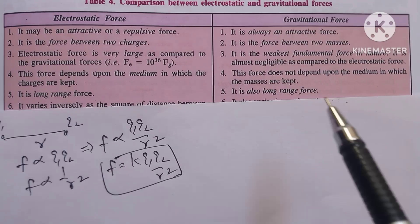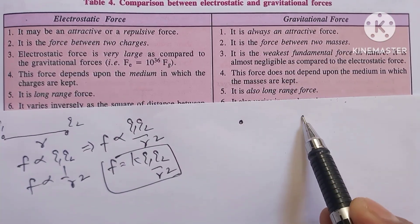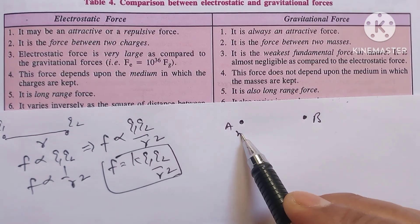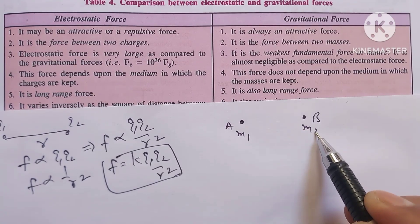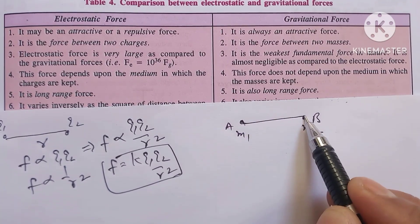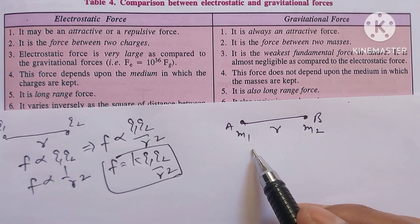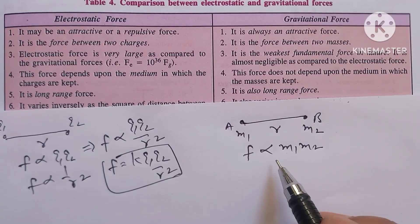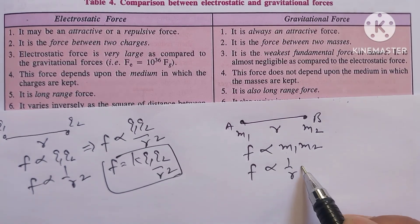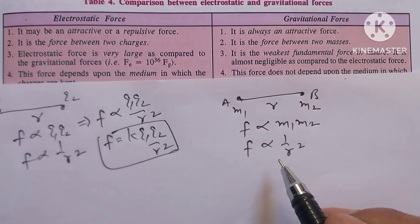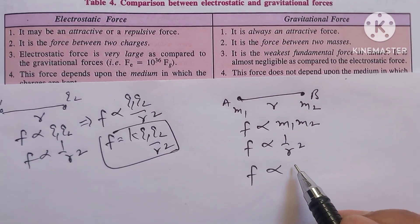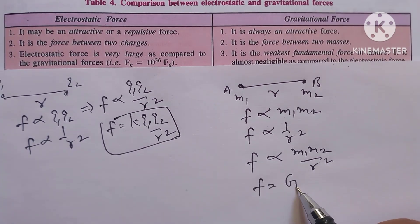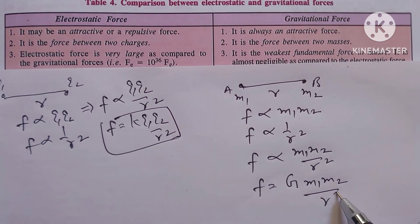On the other hand, gravitational force is a force of attraction between two bodies. Let us suppose this is body A and this is body B, the mass of body A is M1 and the mass of body B is M2. Let the distance between these two bodies be R. Then there is a force of attraction which is directly proportional to the product of masses and inversely proportional to the square of the distance between them. This implies F is proportional to M1 times M2 over R squared. To remove this constant of proportionality, we take a constant G, known as the gravitational constant.